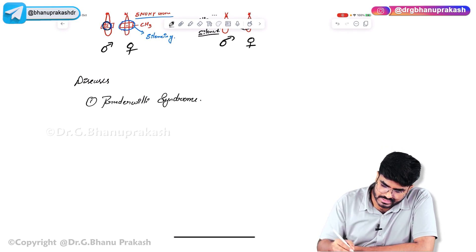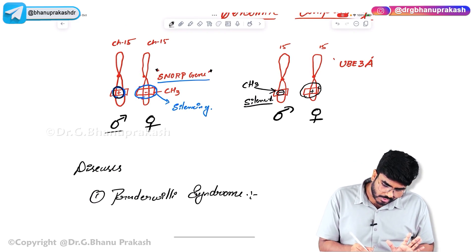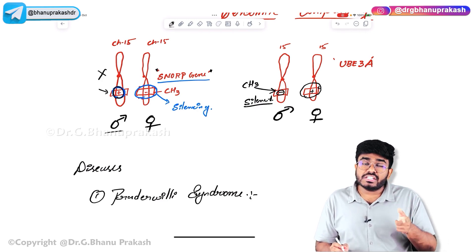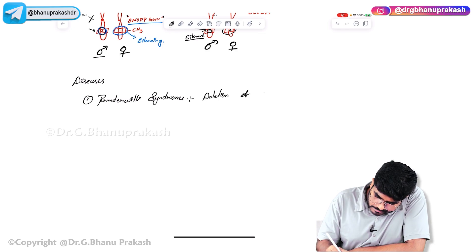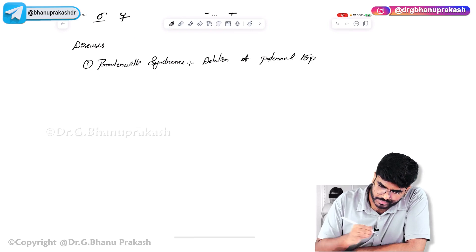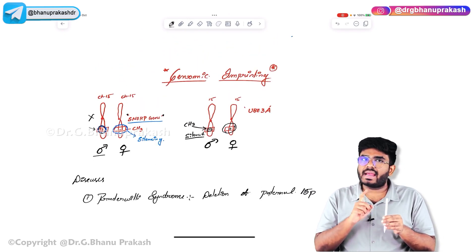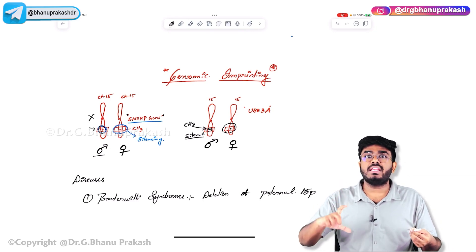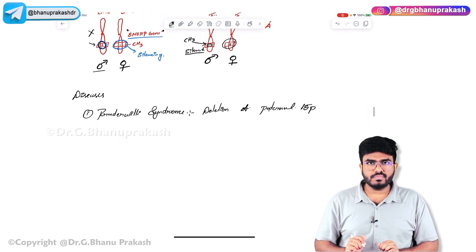What is the problem with Prader-Willi syndrome? The SNRPN genes are only, only expressed in the paternal chromosomes. What happens if you lose that paternal chromosome? If the paternal chromosome 15 — specifically the P arm — is deleted, the person only has the maternal chromosome, but it is non-functional and silenced. So those genes which are only active on the paternal chromosomes are lost. The maternal genes are there but silenced. This deletion of paternal chromosome 15 causes Prader-Willi syndrome.